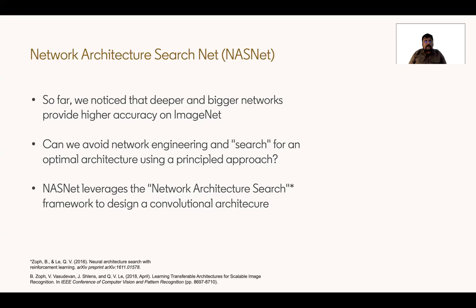So far, we have talked about different networks, and we have realized that deeper and bigger networks provide higher accuracy on ImageNet, which is an important benchmark for image classification. But can we avoid network engineering and search for an optimal architecture using a principled approach? This is the question NASNet answers, and NASNet leverages the network architecture search framework to design a convolutional architecture that performs well on ImageNet.